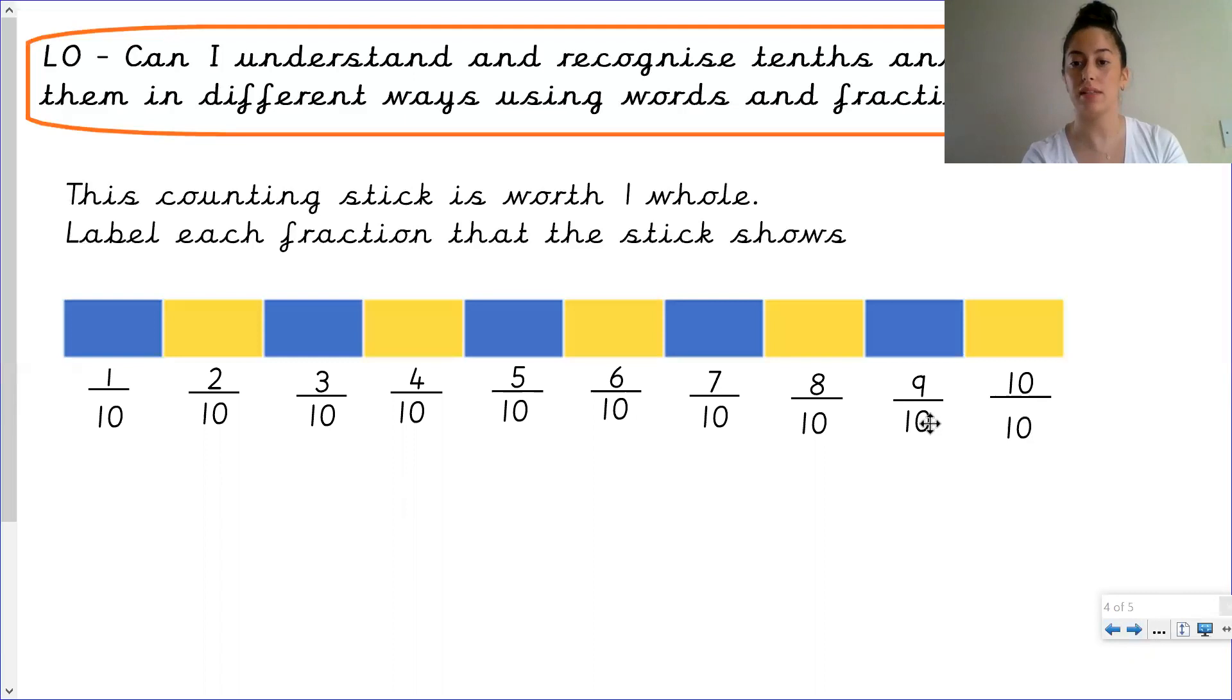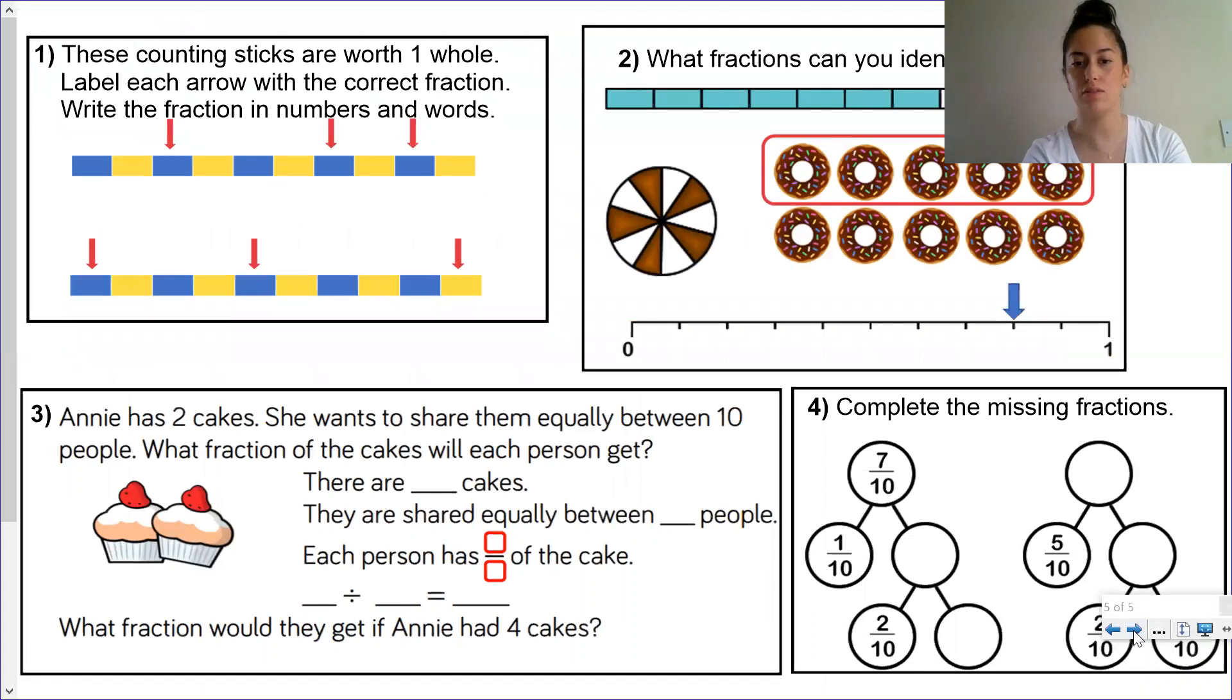Okay. And as we can see, the denominators are all ten because they all represent the same whole that's been divided into ten equal parts. Okay. So this is your independent activity. Make sure you upload all your work to Tapestry. Share it with us on Facebook and on Instagram if you would like to. Go over the video if you can't remember any of the methods. And well done for doing all your work at home.